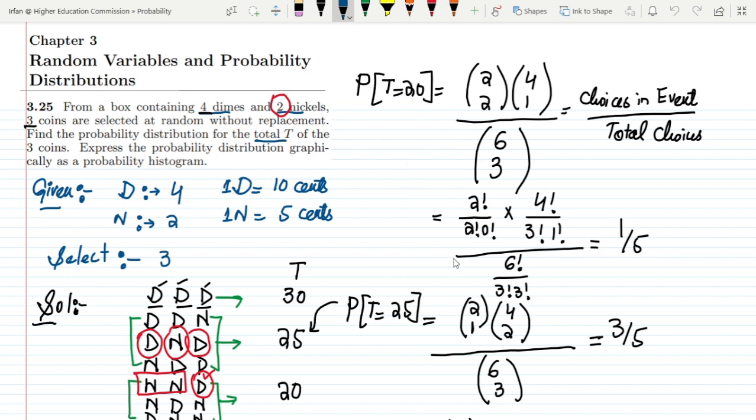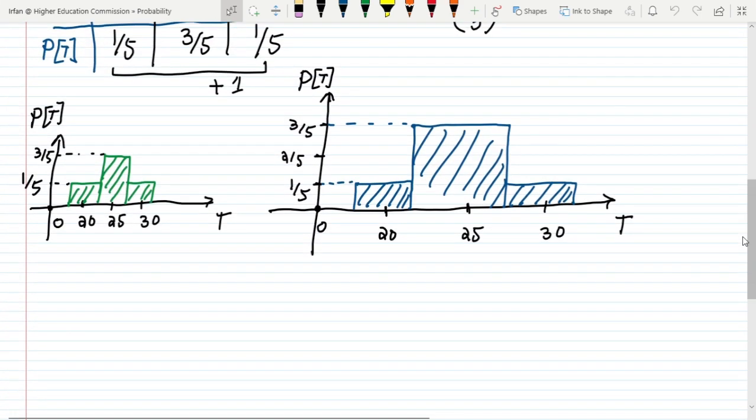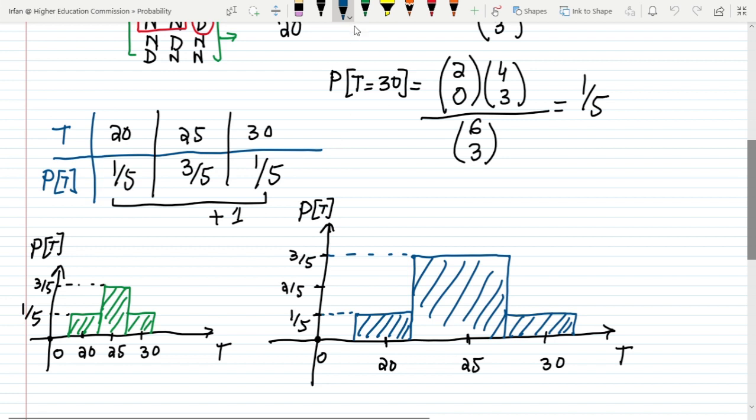So we had solved it and the probability distribution for this was graphically shown as well like this one. Similarly the tabular form was also shown here. It was a tabular form.